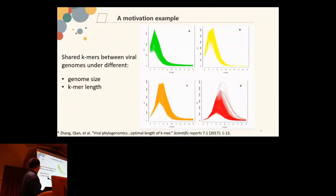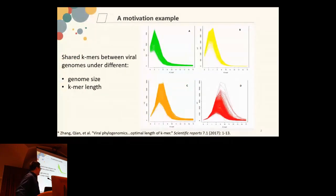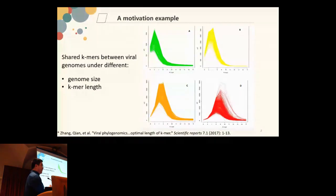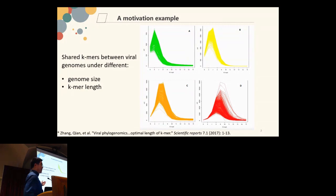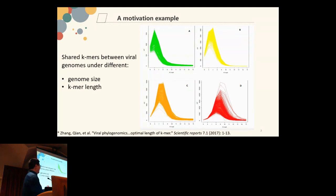This is a study trying to build a phylogenomic analysis for all viral genomes that are publicly available. A fundamental question researchers may encounter when utilizing k-mers is: which k-value should we use? Here is one example to find the optimal k-value. This figure shows the shared k-mers between viral genomes at different genome sizes and choices of k, making it fairly easy to determine which k-value to use to build a phylogenomic tree.